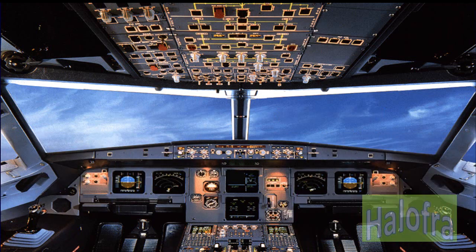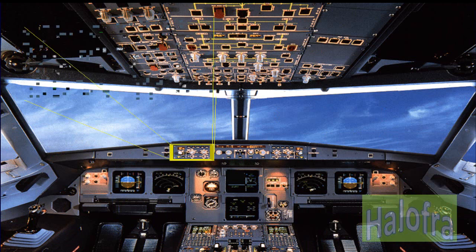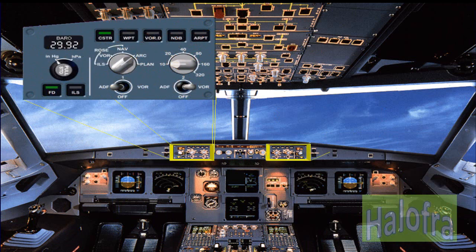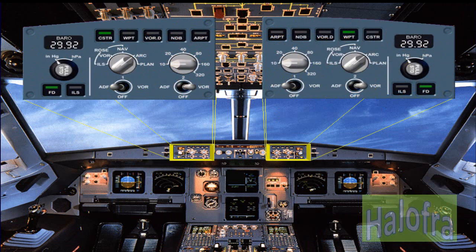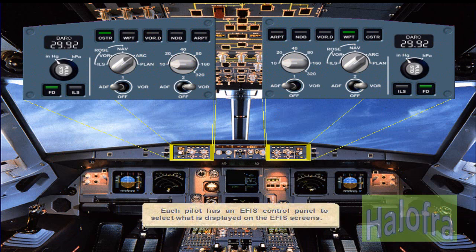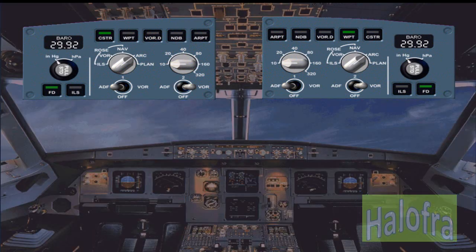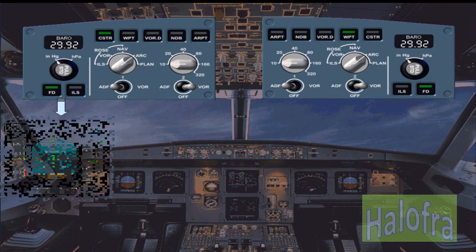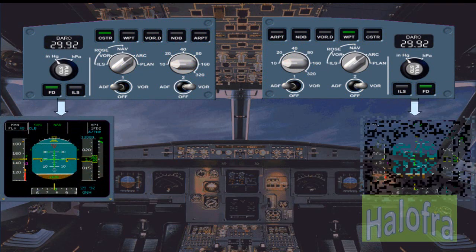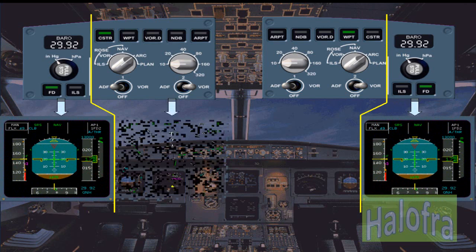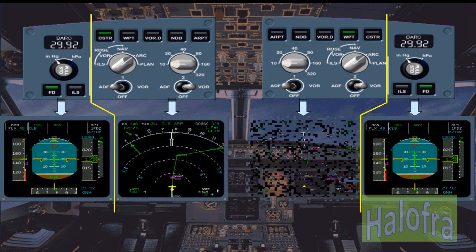Each pilot has an EFIS control panel to select what is displayed on the EFIS screens. The EFIS control panels are divided into two sections: one section associated with the PFD and the other with the ND.